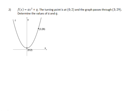Okay, number 2. f of x is equal to ax squared plus q. The turning point is at 0 and 2. So in other words, we have shifted this graph 2 units up from the origin. And the graph passes through the point 3 and 29.